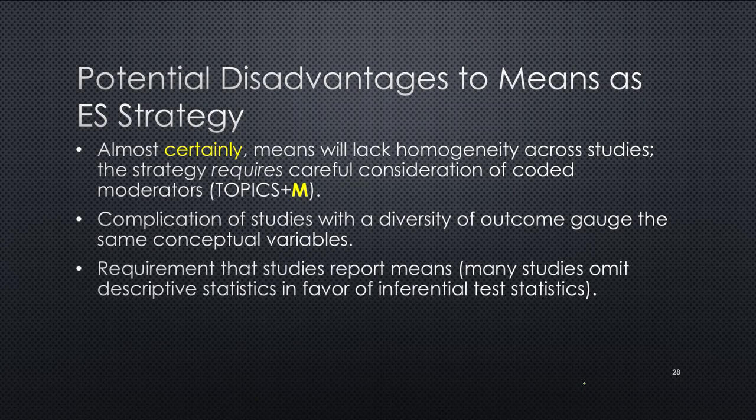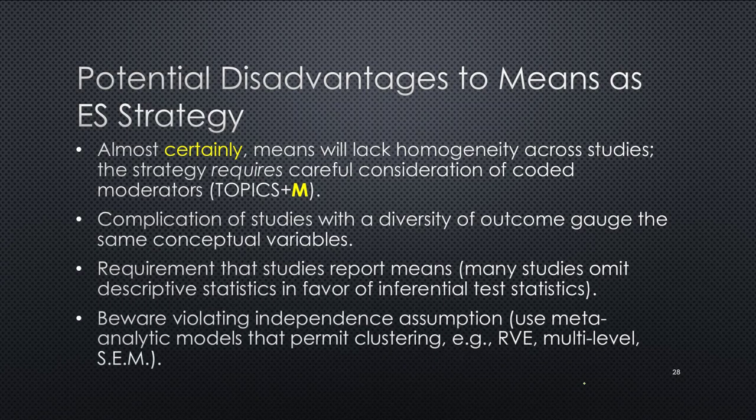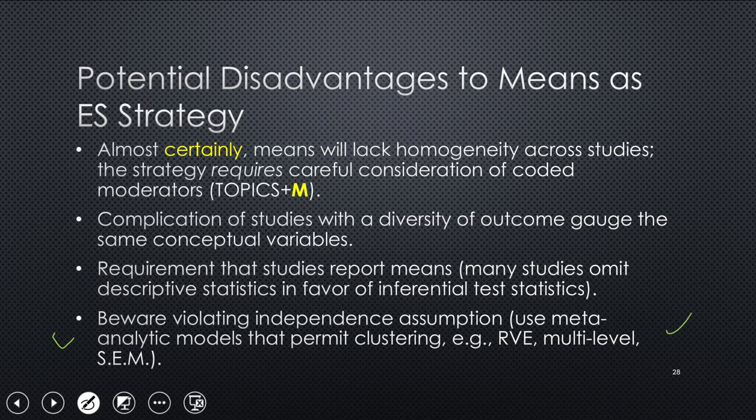You will have a requirement that the studies report means. So if they omit them because they're just giving inferential test statistics, you may not be able to convert them into means. And beware, this is one that needs a lot of attention. In meta-analysis, we have the standard non-independence assumption. Each effect size should be independent from the others, but if you're disaggregating means from particular studies, they have a form of dependency that is not being controlled when you do classical meta-analysis. So you might want to do things that permit clustering like robust variance estimators, multilevel models, or structural equation models.